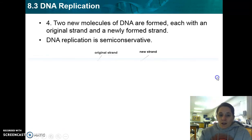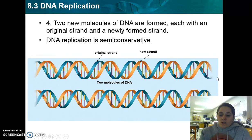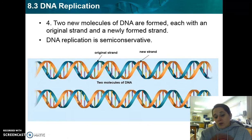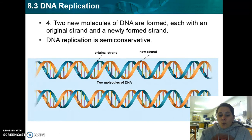The covalent bonds are what hold the new nucleotide strands together. In the end, DNA is known as semi-conservative because you use partly the old strand and partly a new strand when you create the strands of DNA. From one strand of DNA, we split it open and create an identical set of new DNA.